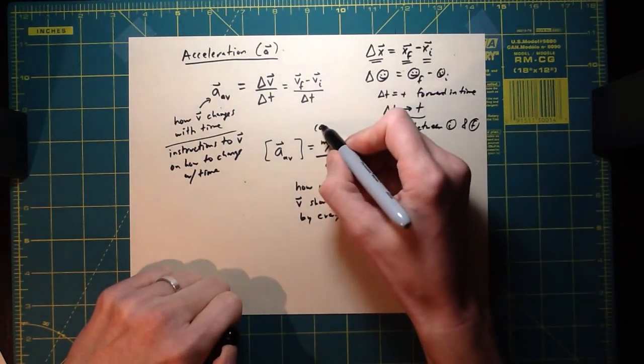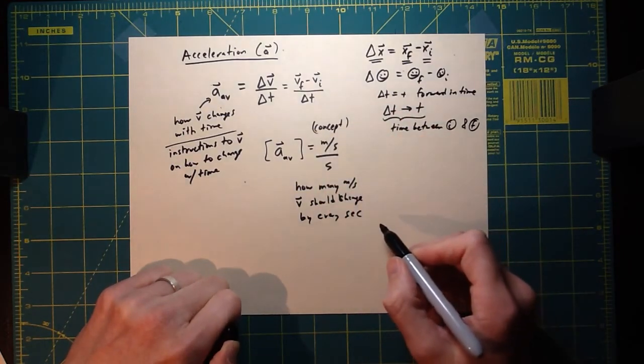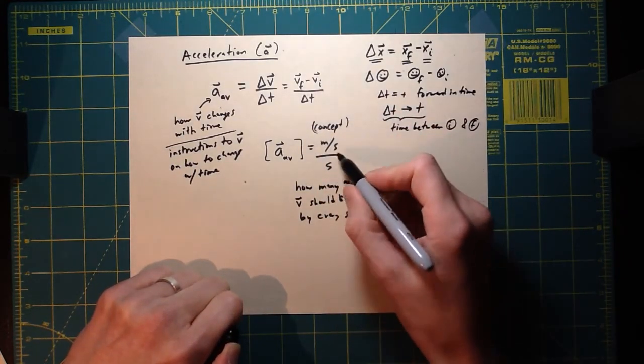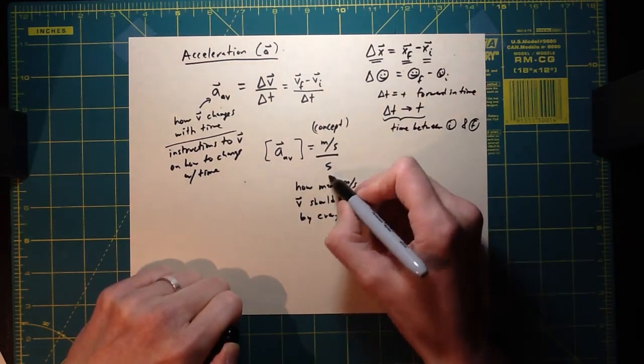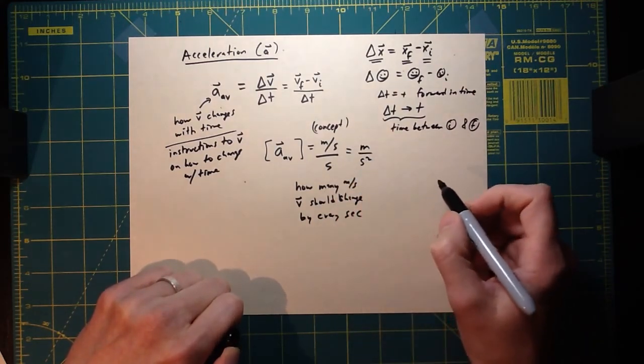I like this form at least to start because it's very conceptual. Well I'll use that at first, but for those of you that may notice, mathematically these seconds are both in the denominator. So you can also write this as meters per second squared. So this is a compact notation that we'll use once we're comfortable with it.